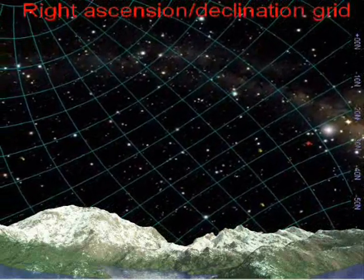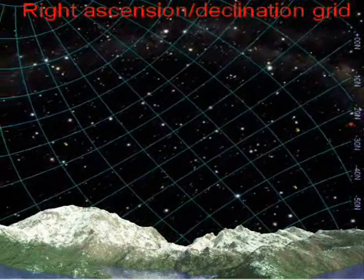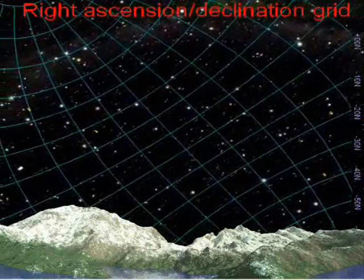Zero degrees longitude passes through Greenwich, England and is the designated reference line for longitude. What then is the reference line for zero hours right ascension?